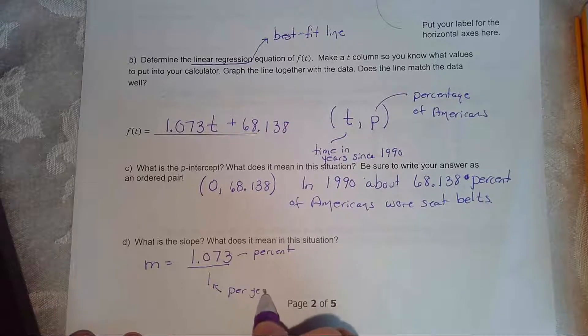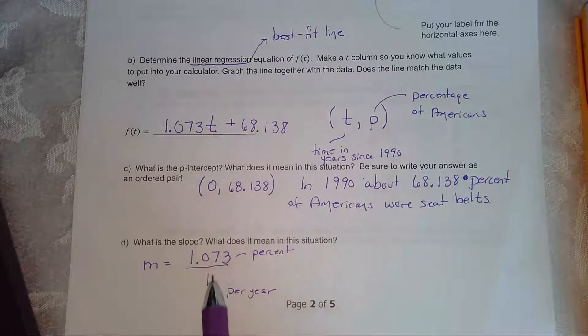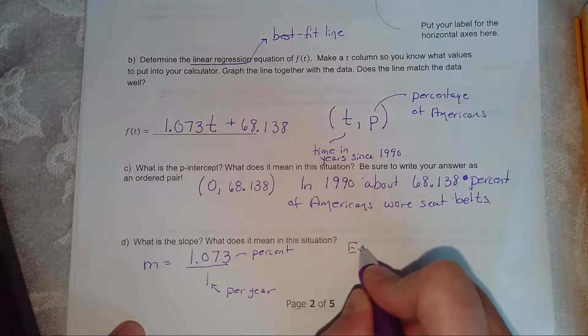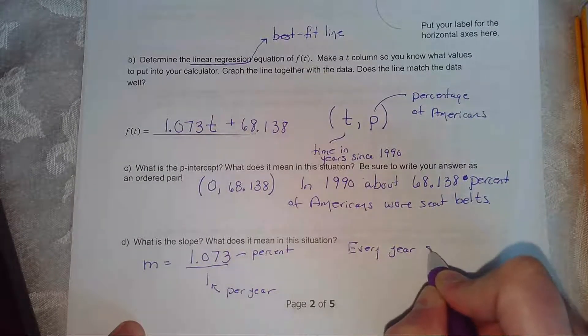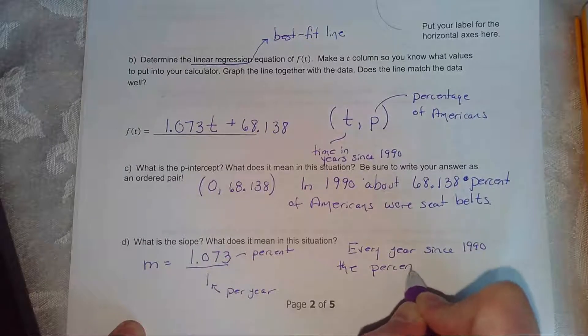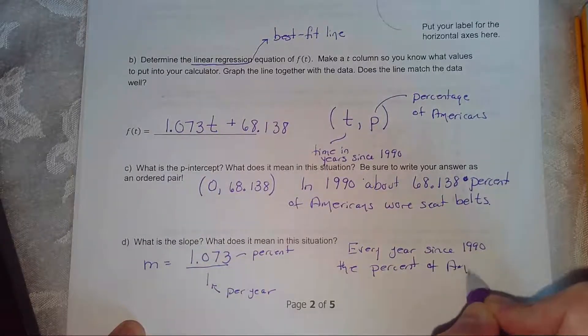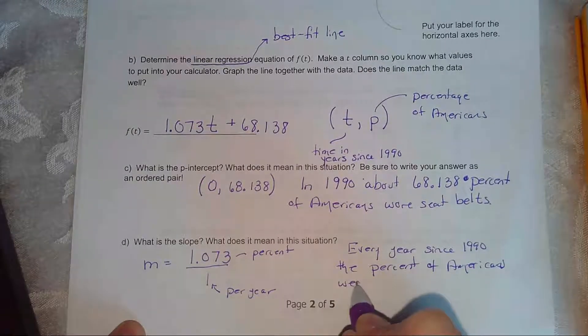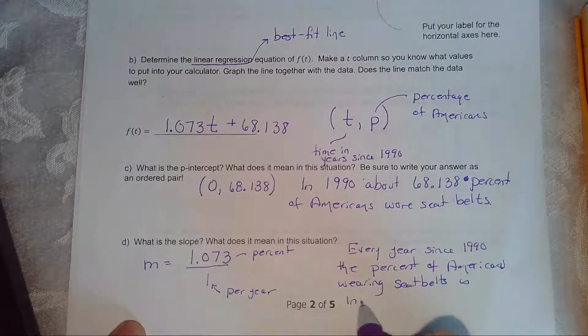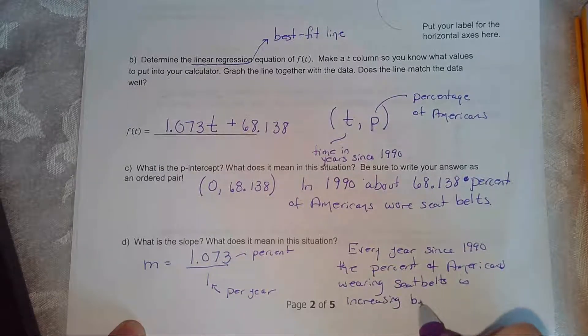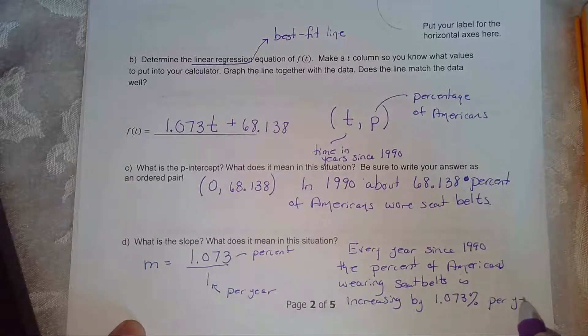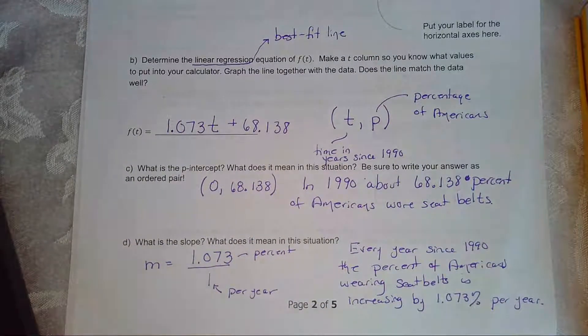So per one year. So it looks like the percentage of Americans wearing seat belts is rising. So every year since 1990, the percent of Americans wearing seat belts is increasing by 1.073 percent per year.